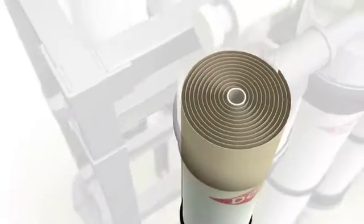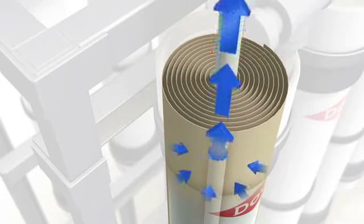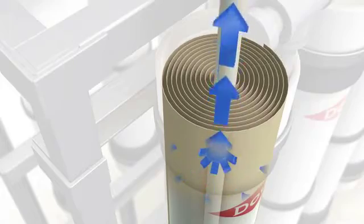The desalinated water then flows through a pipe in the center of the tube assembly. The Dow membrane is coiled around the central collection pipe.